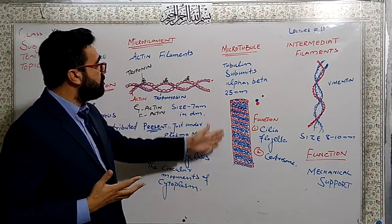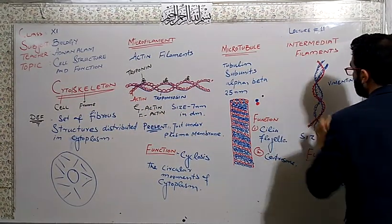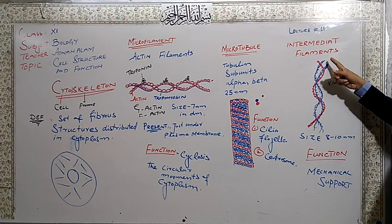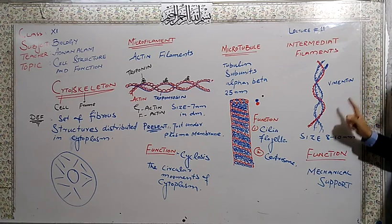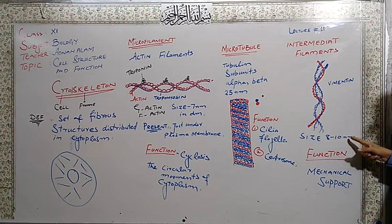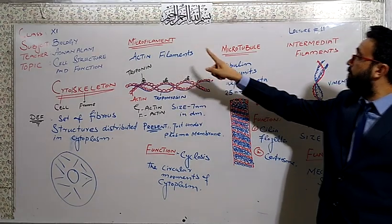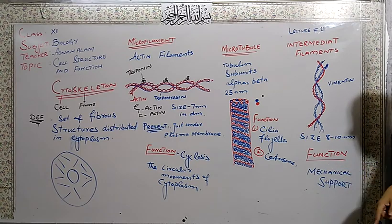Second one is microtubules. These are tubulin subunits and two subunits are present - one is called alpha and beta. Tubulin is a protein and its diameter is 25 nanometers, means more than the microfilaments. Alpha and blue are the beta, they are arranged in such a way: alpha, beta, alpha, beta. And their function is cilia and flagella are made up of microtubules. Centrosome, centriole structure is also made up of microtubules. Spindle apparatus - microtubule subunits are important.